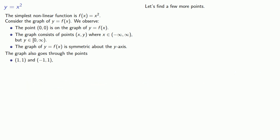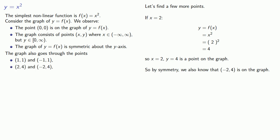If x equals 2, y equals f(x), f(x) is x squared, x is 2, so y equals 4. So (2, 4) is a point on the graph. And by symmetry, we also know that (-2, 4) is on the graph.